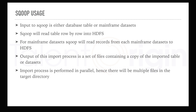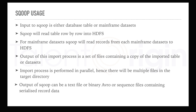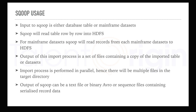The import process is performed in parallel, hence there will be multiple files created in the target directory. The output of Sqoop can be a text file, a binary file, a sequence file, or even a Parquet file. It supports multiple data formats for writing into Hadoop or HDFS.